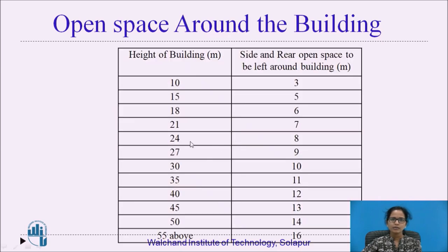Accordingly, we have the height, side, and rear margins which should be left around the building. If the height of a building is 10 meters, the side margin and rear margin to be left as open space will be 3 meters. Likewise, there is a table for the height of the building and the corresponding side and rear margins to be left around the building.